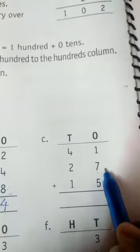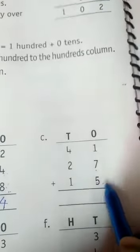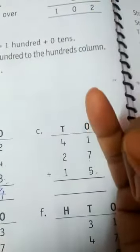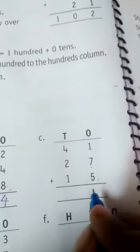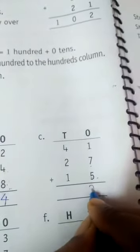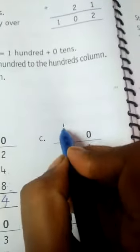1 plus 7 is equal to 8, 8 plus 5 is equal to 8 in your mind and 5 in your hand. 9, 10, 11, 12, 13. So here it is 13, write 3 in the ones place and 1 here.